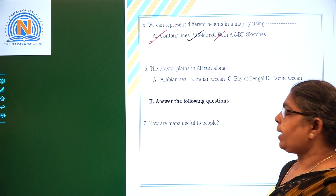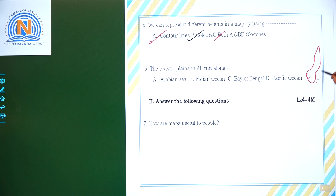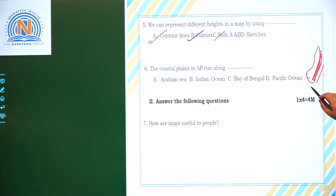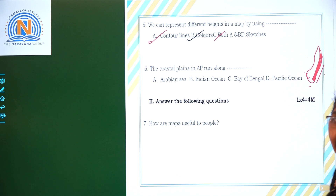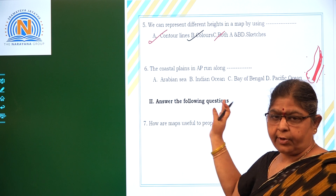The coastlines in Andhra Pradesh run along which ocean? If you look at the map of Andhra Pradesh, the coastal area runs along the Bay of Bengal. On one side we have Tamil Nadu, and the other side Karnataka and Maharashtra. Arabian Sea does not border this coastal area.